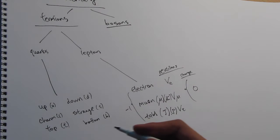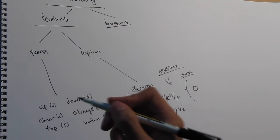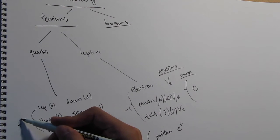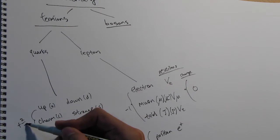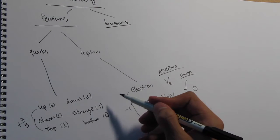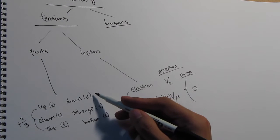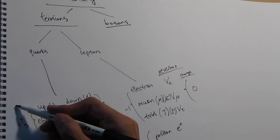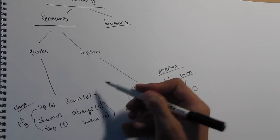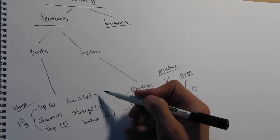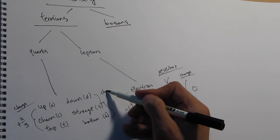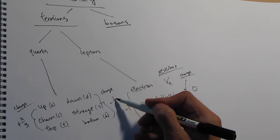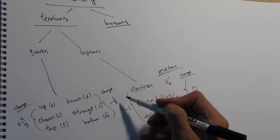Going back to the quarks: the first three quarks — up, charm, and top — have a charge of plus two-thirds. And the other three quarks — down, strange, and bottom — have a charge of negative one-third.